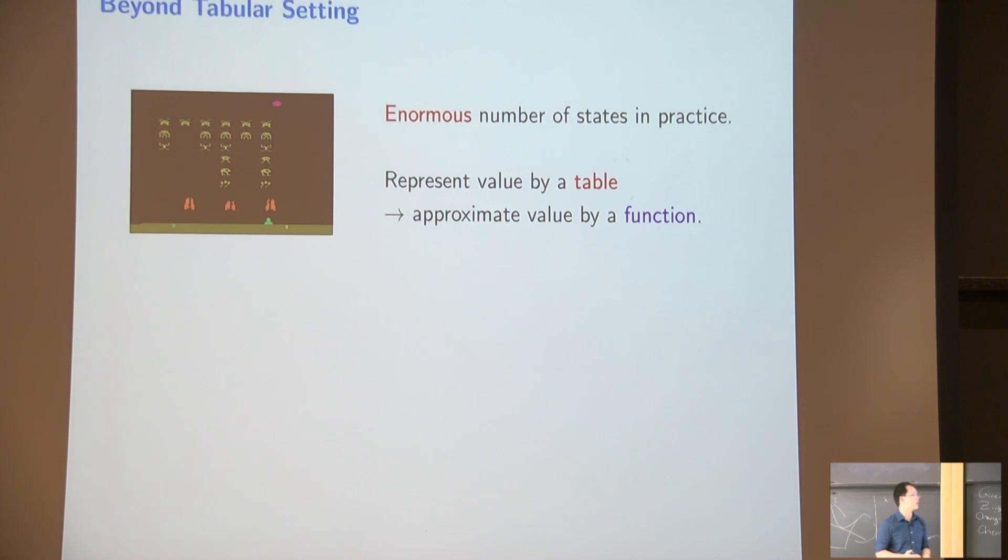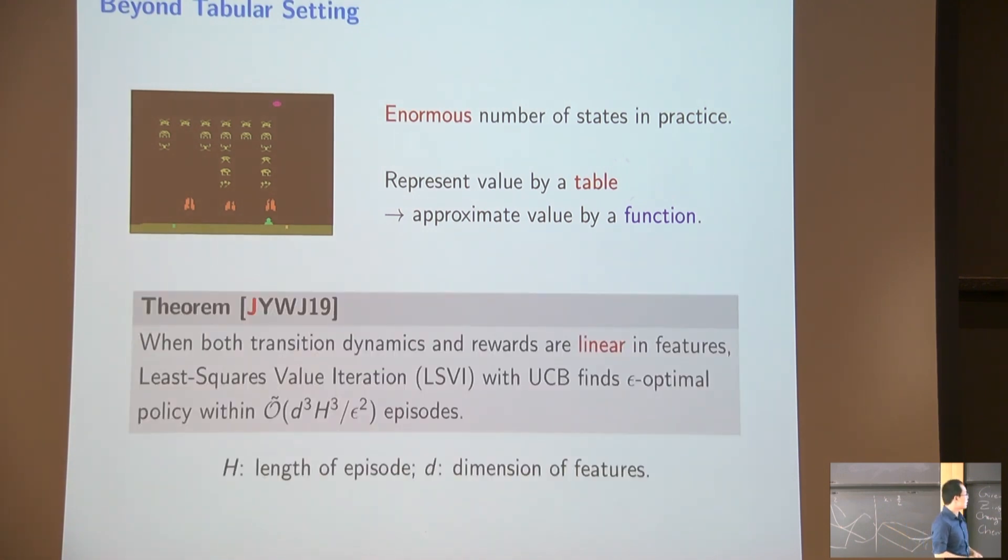However, this function approximation actually introduced a lot of new challenges in the setting. And unlike the tabular setting, there essentially like almost no results before. And there are a few results very recently. So one of the results we have been done recently is in a very simple setting of linear function approximation. So we just move one step further. And we're seeing if the value function can be presented and approximated by the linear function. So in the theorem, in a joint work with Yang and Wang and Jordan, and we actually show if the transition dynamics and rewards, both of them, both of the model of MDP is actually linear in features. Then we can use another value-based algorithm, which is very similar to Q-learning. And again, we just adapted the upper-confidence bound techniques. And we can find epsilon-optimal policy, again, no longer in exponential in terms of H, just polynomial in dimensionality, polynomial in H, and 1 over epsilon squared.